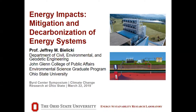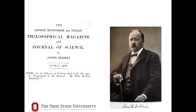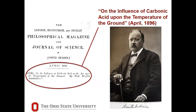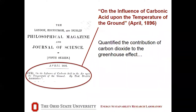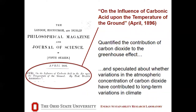I'm here to talk about energy, and this talk follows quite well on Lonnie and Ryan's talk. Seven years before winning the Nobel Prize in chemistry, the chemist Svante Arrhenius wrote an article entitled 'On the Influence of Carbonic Acid on the Temperature of the Ground.' In it he sought to quantify the effect of carbon dioxide and its contribution to the greenhouse effect, and speculated on how variations in CO2 concentrations due to industrialization might contribute to long-term variations in climate.